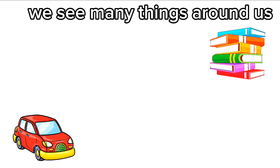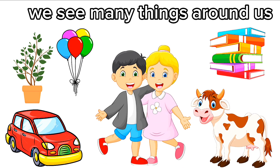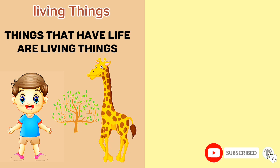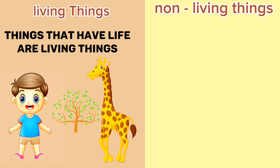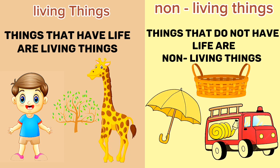We see many things around us — some are living things, while some are non-living things. Things that have life are living things, like human beings, plants and animals. Things that do not have life are non-living things, like a basket, umbrella, fire engine and many more.